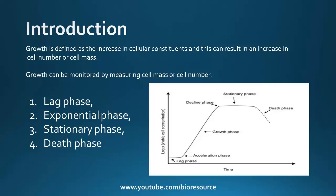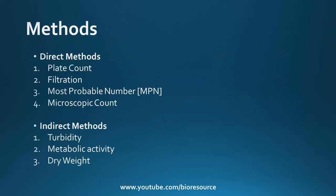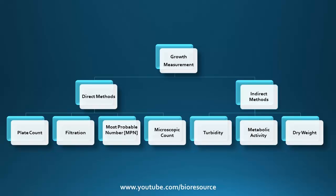It is important to measure bacterial growth, and it is useful in various applications. Depending on the application, different methods can be chosen. There are two main methods: direct method and indirect method. Direct methods include plate count, filtration, most probable number, and microscopy count. Indirect methods include turbidity, metabolic activity, and dry weight.